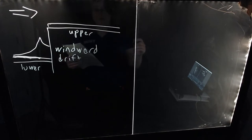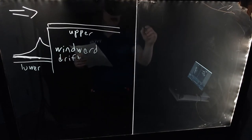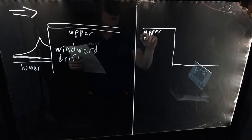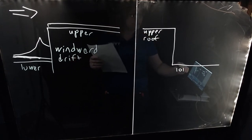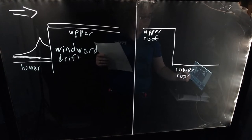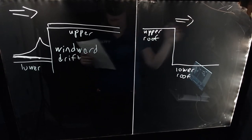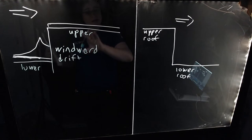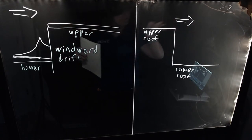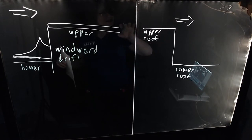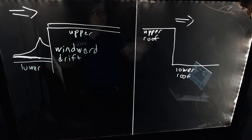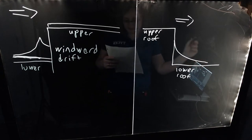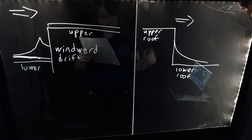We also have the opposite situation, where the wind is coming from the other way. With an upper roof and a lower roof, the wind piles up the snow against the upper roof ledge. In this case, the wind is blowing snow off of the upper roof onto the lower roof, and the shape this tends to form is somewhat different. We refer to this type of drift as a leeward drift.